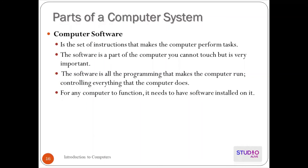Next is computer software. Computer software is a set of instructions that makes the computer perform tasks. Software is the part of the computer that you cannot touch physically, but it is very important — the computer cannot perform any tasks or functionality without it. For example, Windows is an operating system, which is a kind of software. The software controls everything that the computer does.